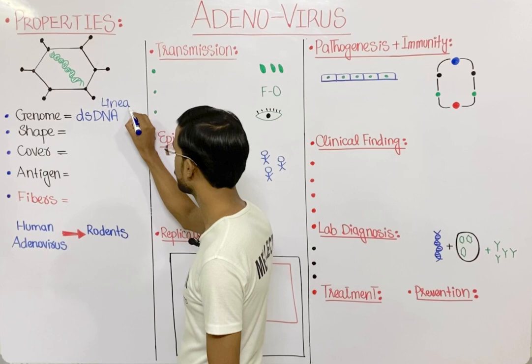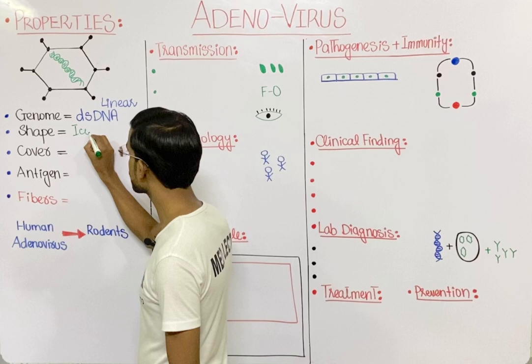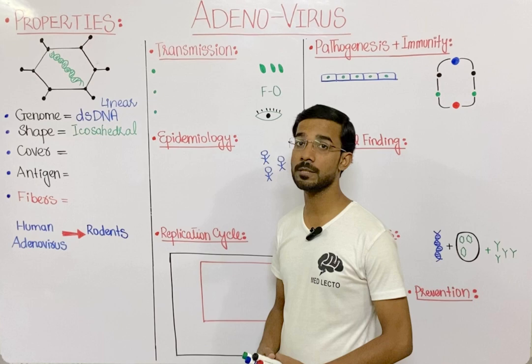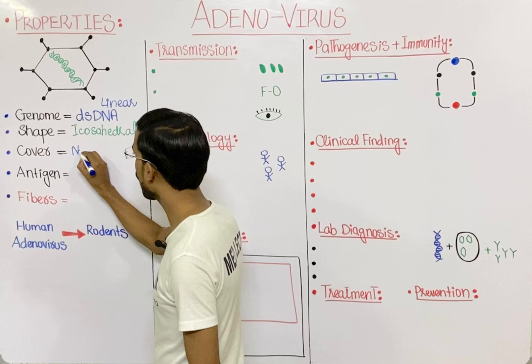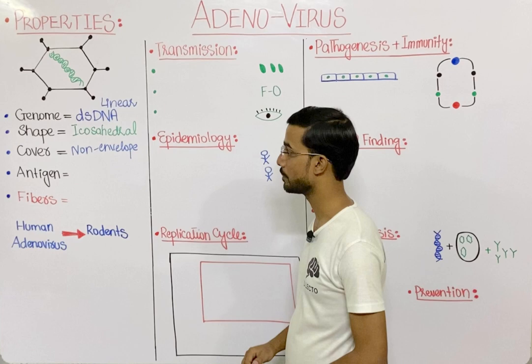The second is the shape of the virus. The shape of the virus is basically icosahedral — icosahedral means 20-sided. The third important property is that adenovirus is basically a non-enveloped virus, meaning the virus does not take any cell membrane from the host.